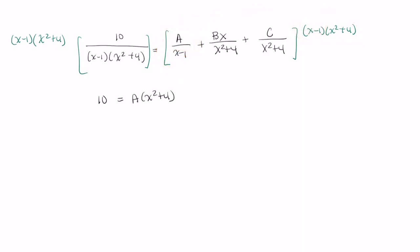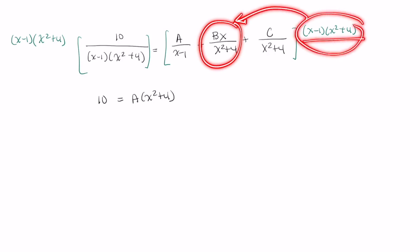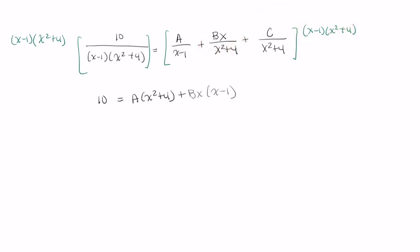Let's do the same thing for the second term. So let's multiply Bx over x squared plus 4. Let's multiply it by this entire expression. x squared plus 4 in this denominator will cancel out this x squared plus 4. So you will just be multiplying Bx to x minus 1. Next,